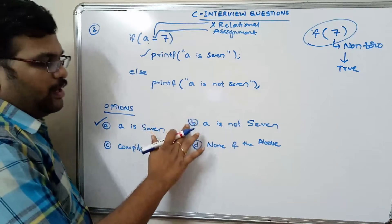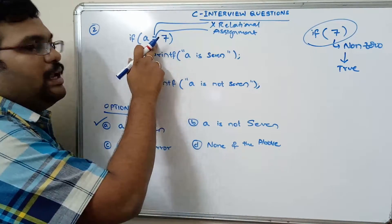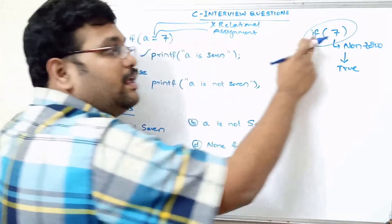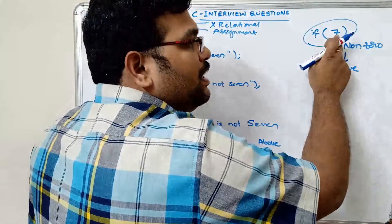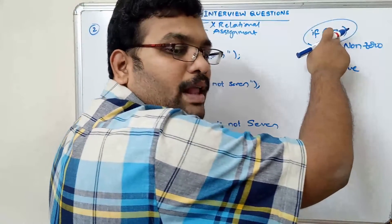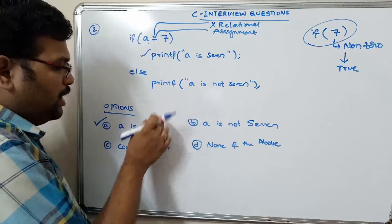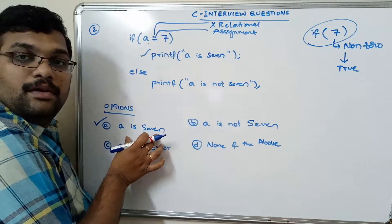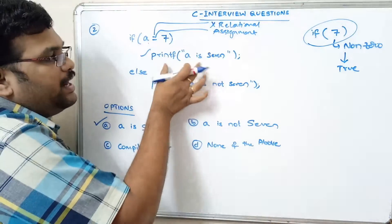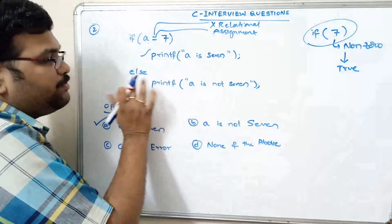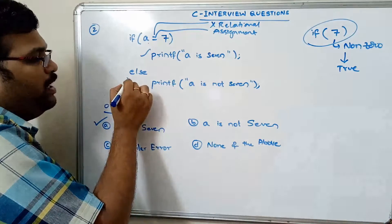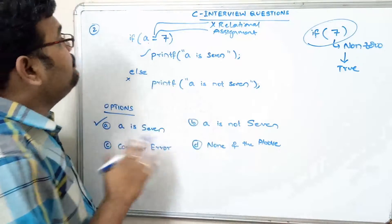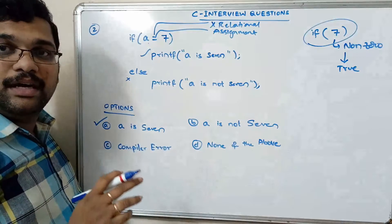Here we are using the assignment operator, and 7 is a non-zero value, so the condition is true. The true block will be executed and the else block will be ignored. So the answer is 'a is 7'. A simple point: 0 is false, and every non-zero value is true in C.